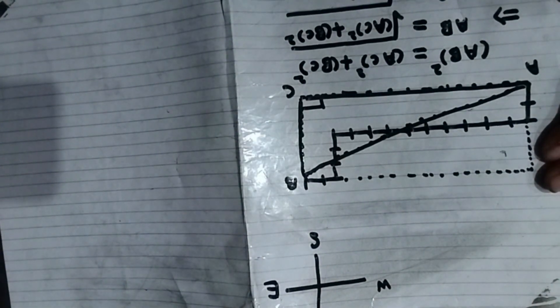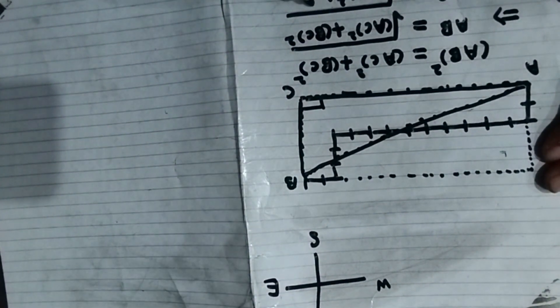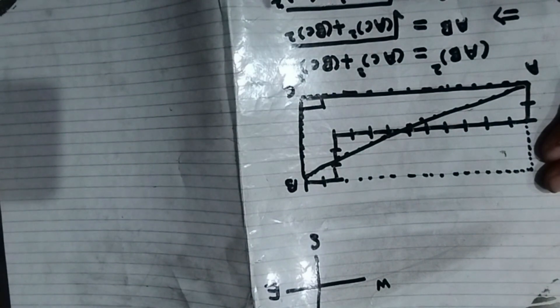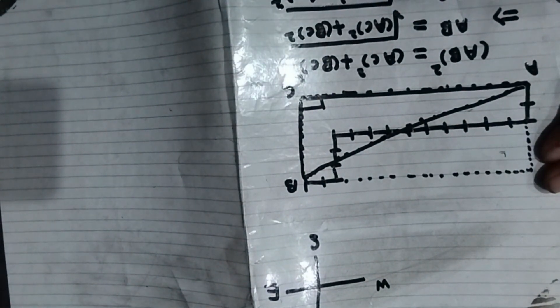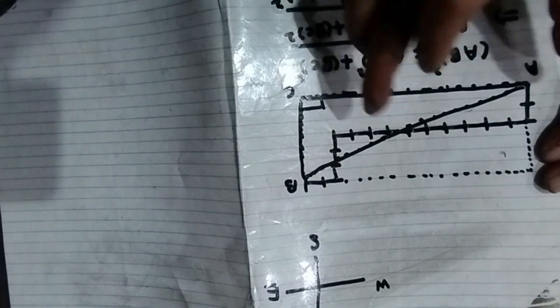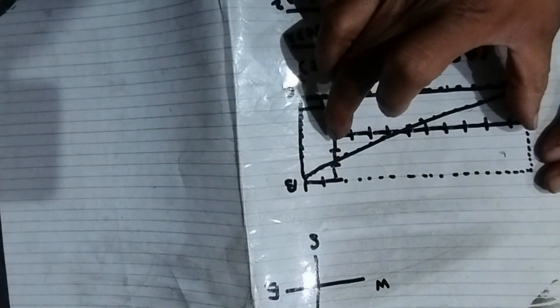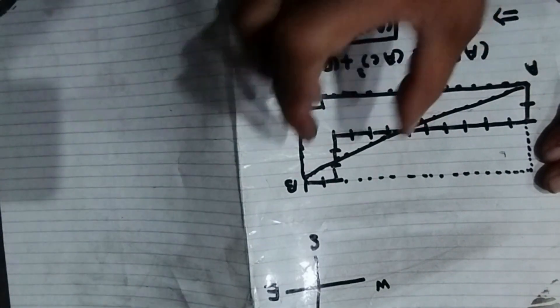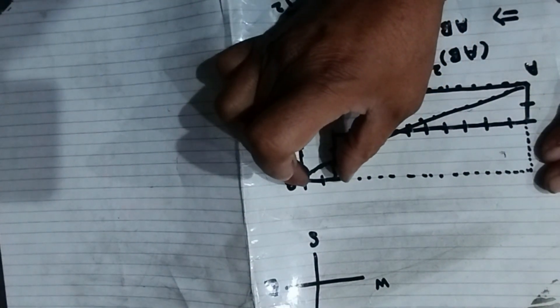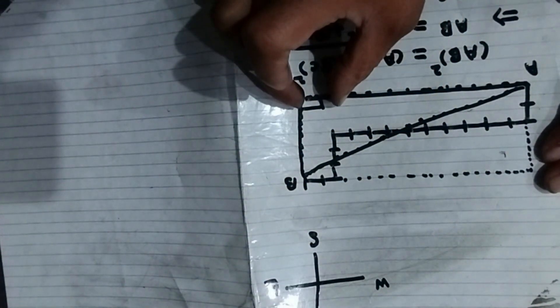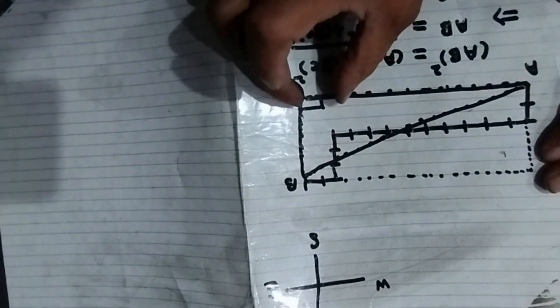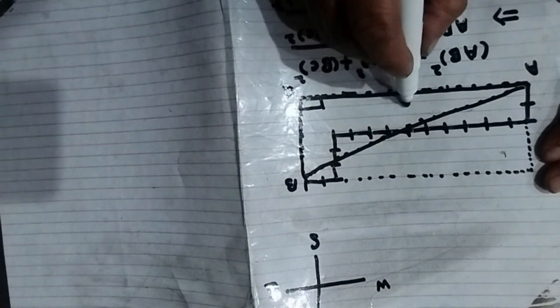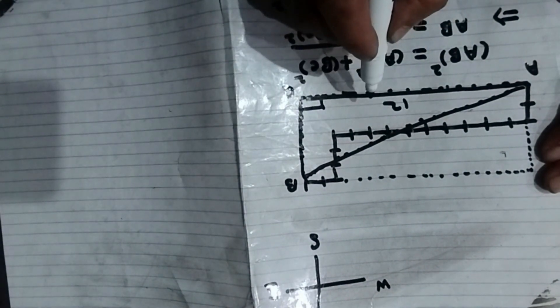So what is the value of AC and what is the value of BC we will put here and here. Now look at the figure. Up till here it is 10 kilometers, and from there it is 2 kilometers. So 10 and 2 makes 12. It means AC is 12 kilometers.